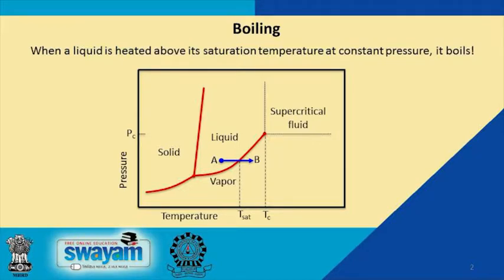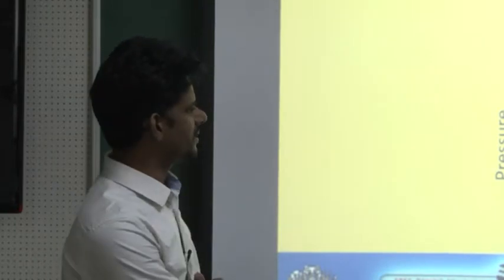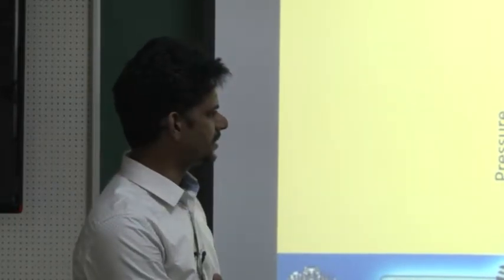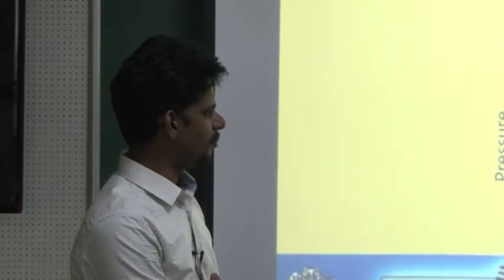When you cross this boundary to point B, the whole liquid becomes a vapor. This boiling process can be illustrated through this path where a liquid's temperature is increased beyond T-sat and boiling happens.